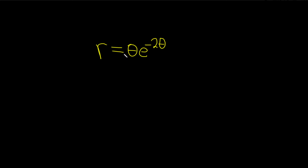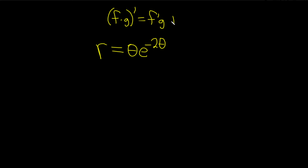We have a product of two functions, so we're going to use something called the product rule. The product rule says if you have a function f times a function g and you want to take the derivative, think of f as your first function and g as your second. The formula tells us it's the derivative of the first times the second, plus the first times the derivative of the second.